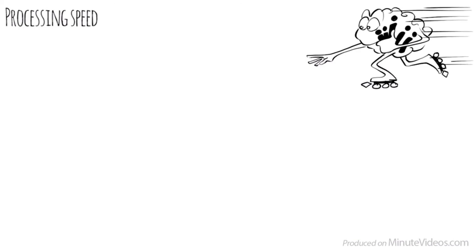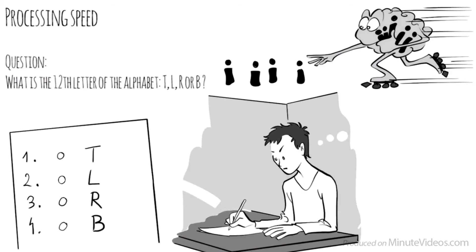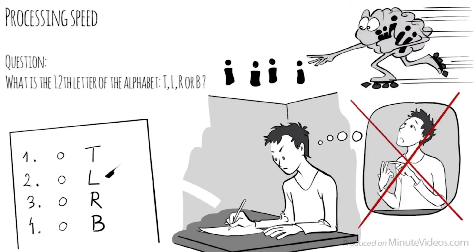The fourth section was about processing speed, the pace at which we take in new information and make sense of it in order to prepare a response. One of the questions asked was, What is the twelfth letter of the alphabet? Is it T, L, R, or B? I realized I had to rule out all the options that didn't look right. Counting would have taken way too long. L is the right answer.